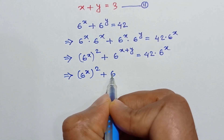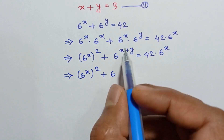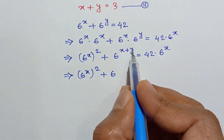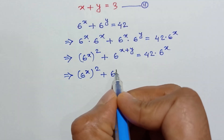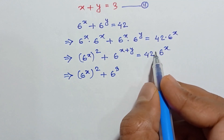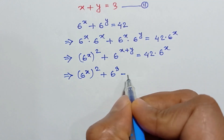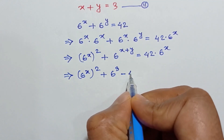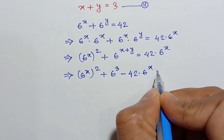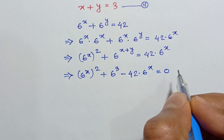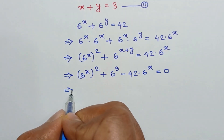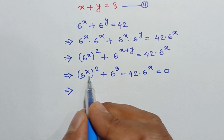From equation 2, we know x plus y is equal to 3. Substituting this, 6 to the power x plus y becomes 6 to the power 3, which is 216. Taking the right side to the left, we have 6 to the power x squared plus 216 minus 42 times 6 to the power x is equal to 0.